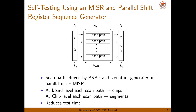The second architecture is self-testing using MISR and parallel shift register sequence generator, also known as STUMPS. In this architecture we have two blocks: a PRPG (pseudo-random pattern generator) and an MISR. The PRPG block generates pseudo-random sequences. If there are N outputs, the MISR takes those N inputs and generates a parallel signature.